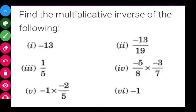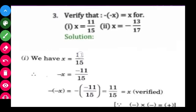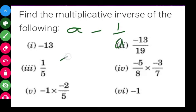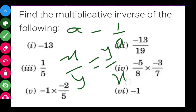The next question asks us to find the multiplicative inverse of the following. The multiplicative inverse of A is equal to 1 upon A, and the multiplicative inverse of X upon Y is equal to Y upon X. In other words, multiplicative inverse means reciprocal.